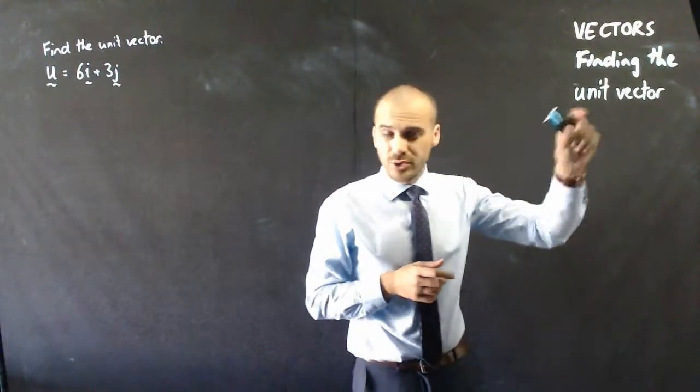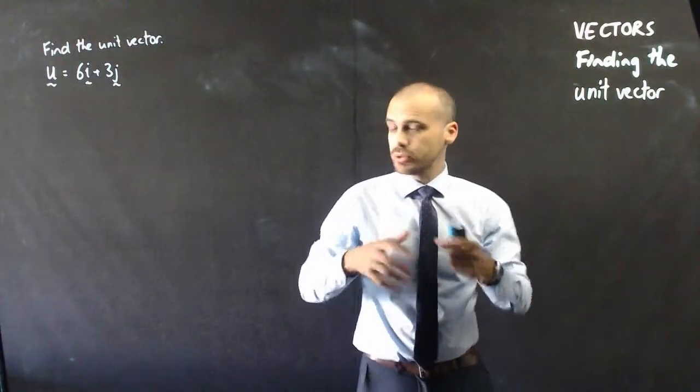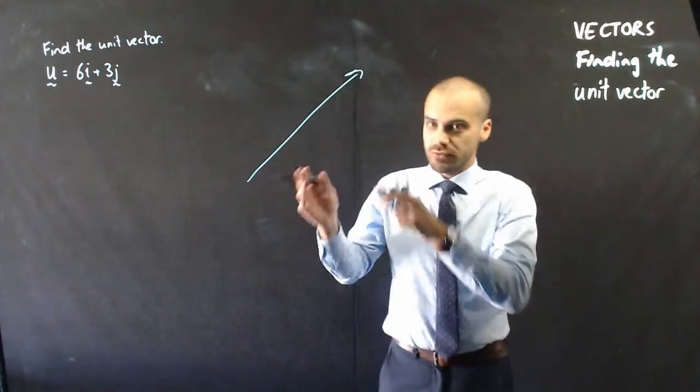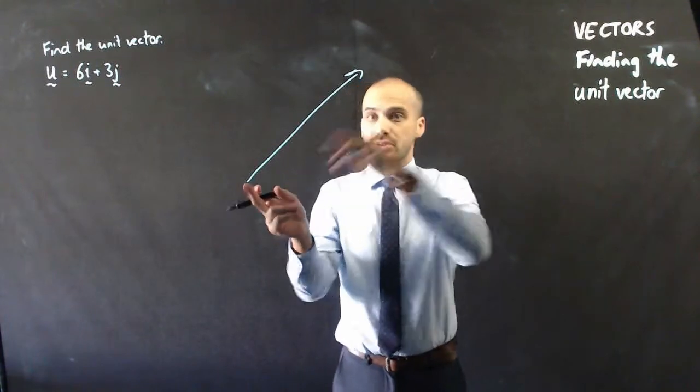Alright, so in this video we're going to find the unit vector. Now, what do we mean by the unit vector? Well, this is a vector, and it's a vector, it has a magnitude and it has a direction.